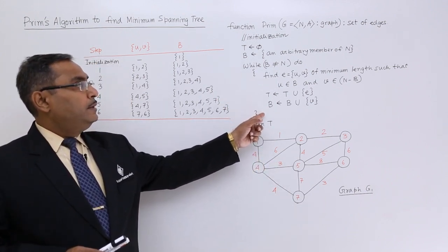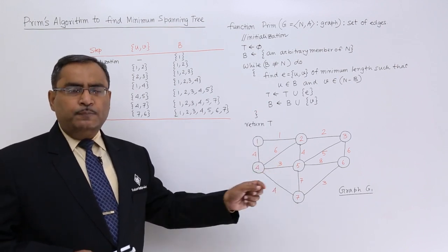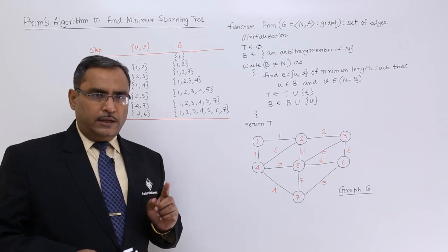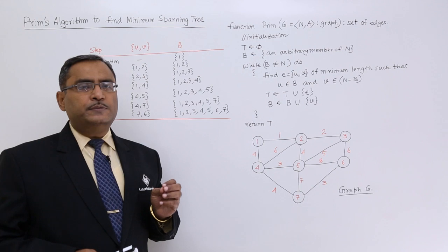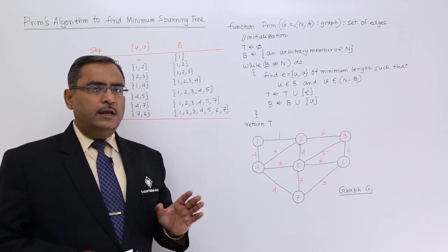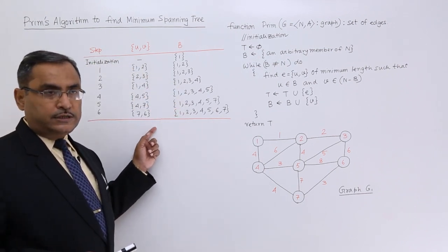This is my Prim's algorithm. I shall execute it on this particular given graph with the seed element as 1. The seed element means the first element from where the minimum spanning tree will grow. That seed element has been supplied, let us consider it to be 1. Now this is my tracing, so we shall go for this.